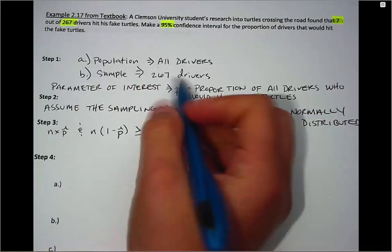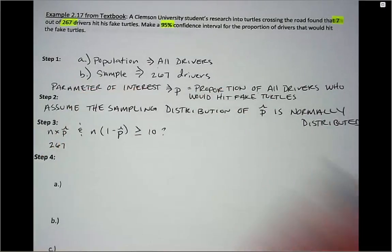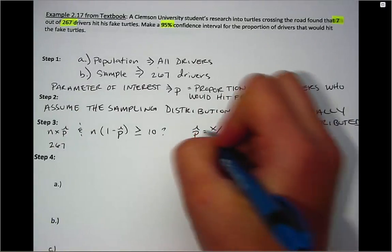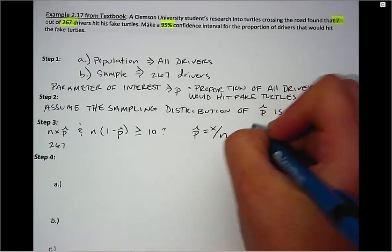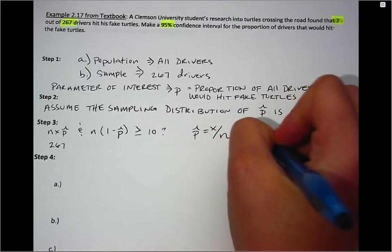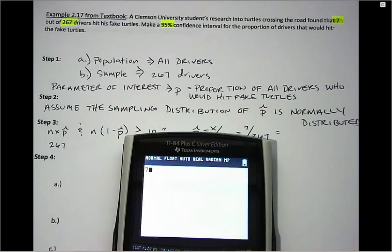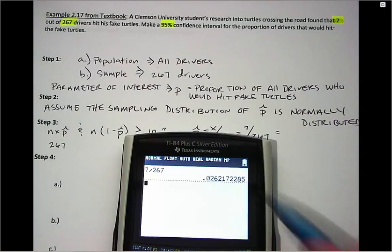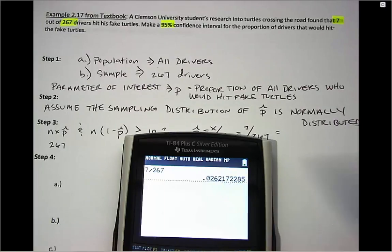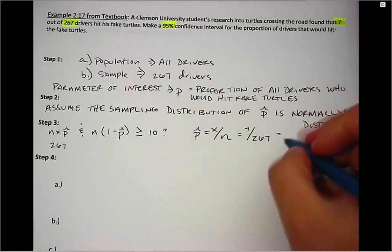Our n is 267, and we haven't calculated P-hat yet. The formula for P-hat is x (the number of successes) divided by n. So we had seven successes divided by 267. With proportion problems you'll want to go out to four decimal places, so P-hat equals 0.0262.